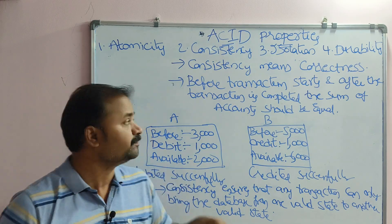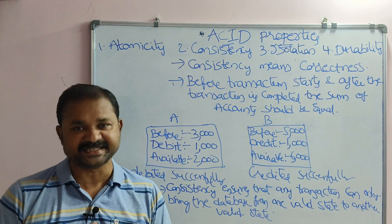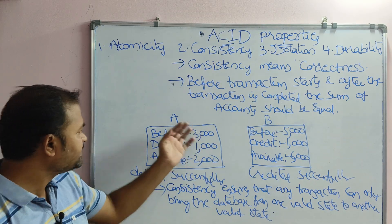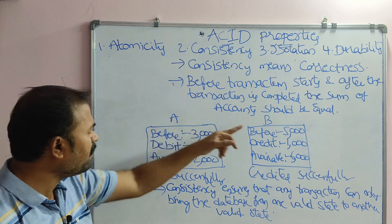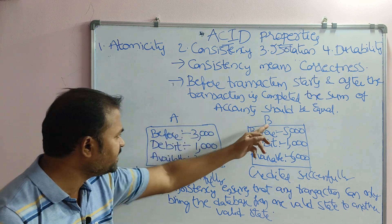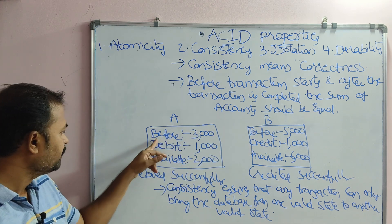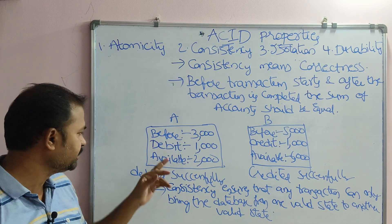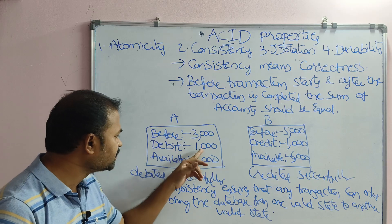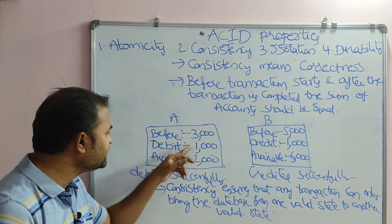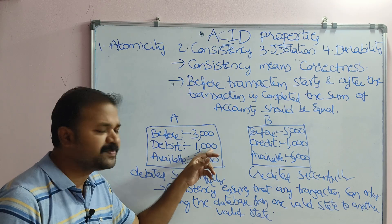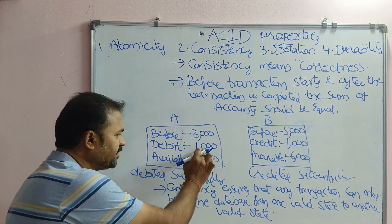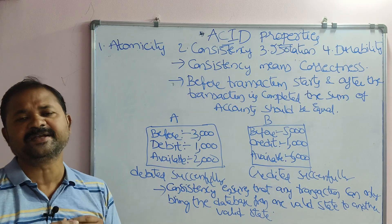Now let's see the second property, that is Consistency. Consistency means correctness. For example, let we have two accounts A and B. Before performing the transaction, account A has a balance of 3000. We are debiting 1000 rupees, so the available balance becomes 3000 minus 1000, which is 2000. So 1000 rupees are debited successfully.